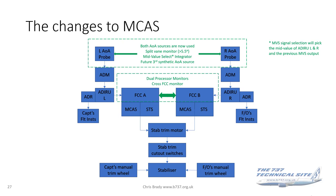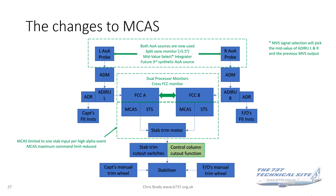The next changes were to the flight control computers. They're now dual processor monitors with a cross-flight control computer monitor. MCAS has now been limited to one stabilizer trim input per high-alpha event. The magnitude of that stab trim input will never exceed the command authority of the elevator input, so it can always be overridden with the control column. And finally, the control column cutout function — which had always been there in previous models of the 737 and was modified to accommodate MCAS — has now been restored.